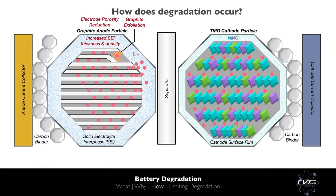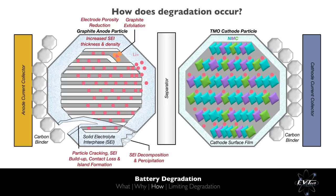High currents, particularly when maintained for long time periods, result in significant mechanical stress within the anode. This mechanical stress can result in the anode particles cracking. When a particle cracks, an element of the anode can become detached, forming a non-electrically active island. Thus, we lose useful anode capacity as well as the lithium ions contained within that detached anode island. In addition, when a particle cracks, a fresh anode surface is exposed to the electrolyte, resulting in the formation of additional solid-electrolyte interface, further consuming usable lithium ions, reducing active anode sites and reducing kinetics.